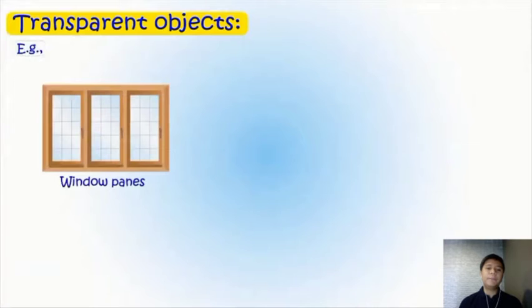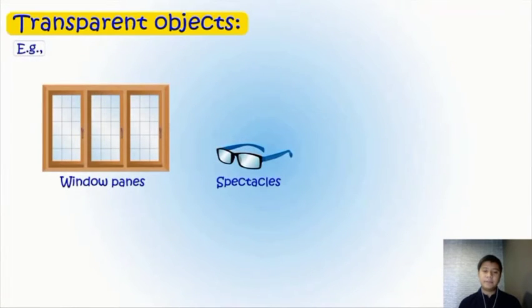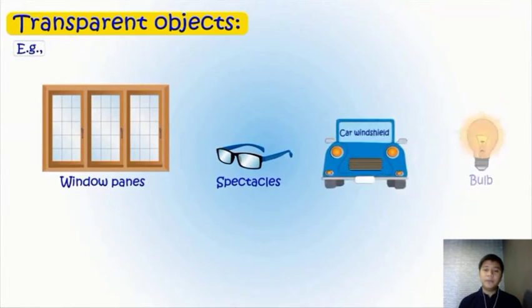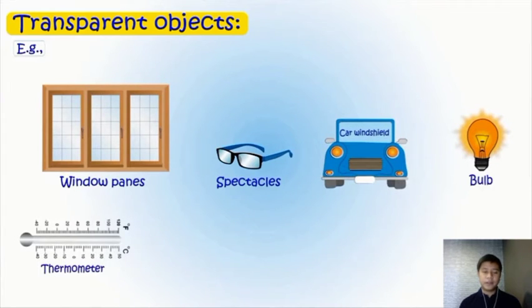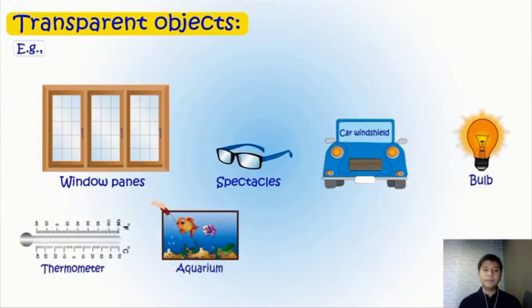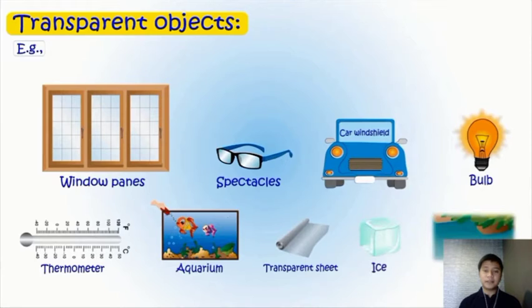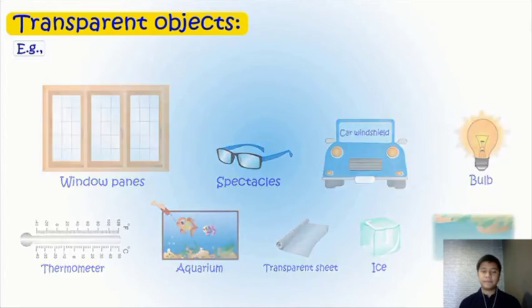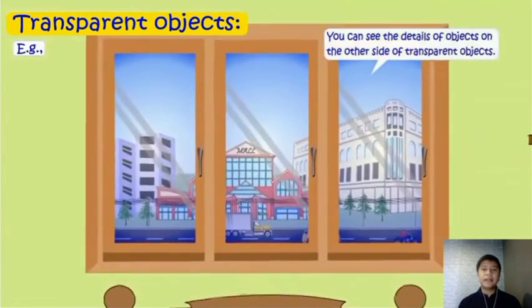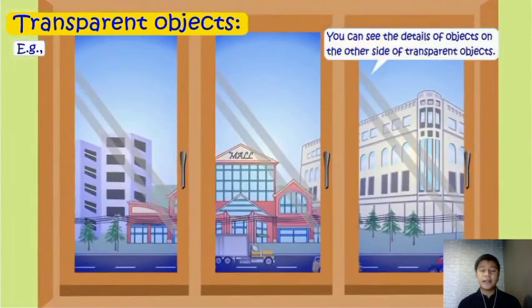For other examples, we have window pane, spectacles, car windshield, bulb, thermometer, aquarium, transparent sheet, ice, and clean water. You can see the details of objects on the other side of transparent objects.